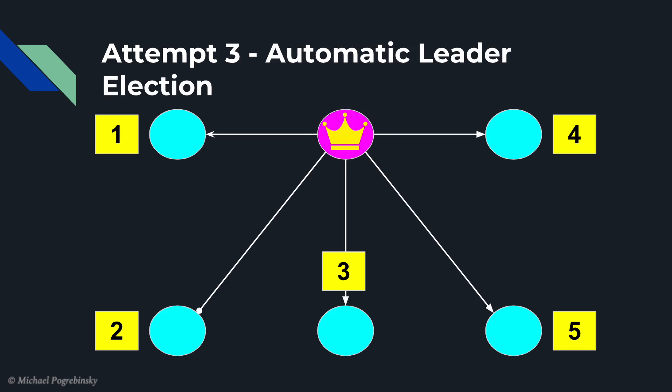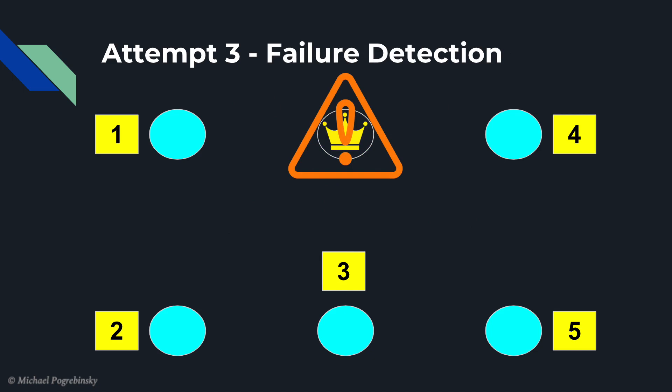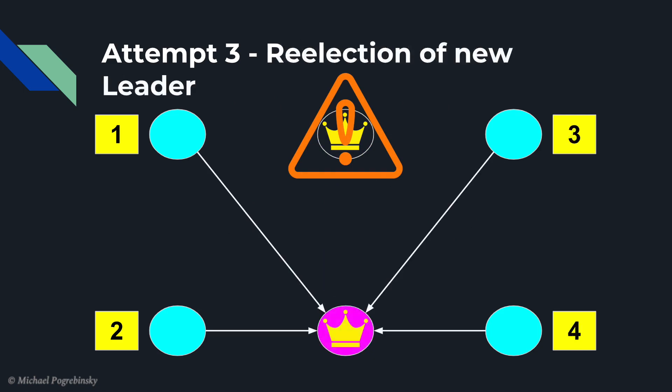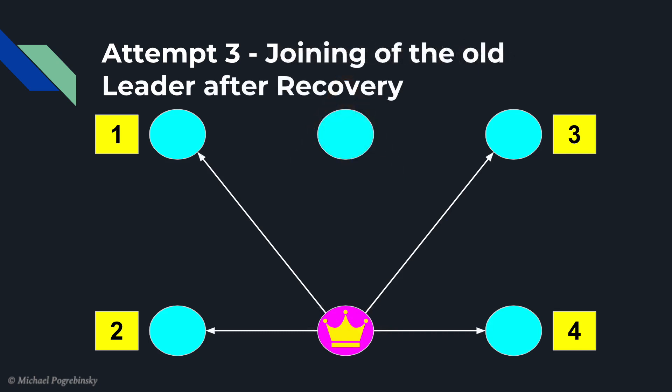The solution is to build an algorithm to allow the nodes to elect their own leader on demand and make them all watch the leader's health closely. If the master node becomes unavailable, the remaining nodes will re-elect a new leader. And later, if the old leader recovers from its failure, once it joins the cluster, it should realize that it's not a leader anymore and would join as a regular node to help with the work.